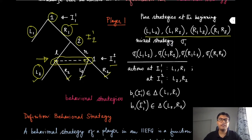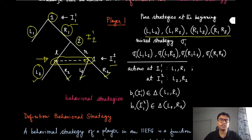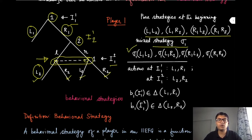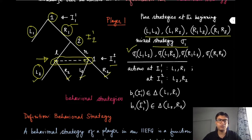By the classical definition of mixed strategy as we defined it for normal form games, we assign probabilities to each of these pure strategies. A mixed strategy for player one will be a probability mass function giving probabilities to all these pure strategies, where these numbers are non-negative and sum to one.